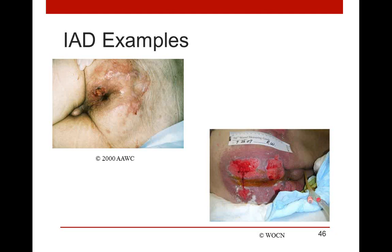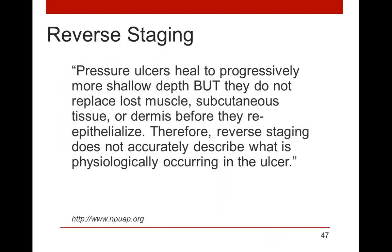Here are some examples of IAD. On the left, we see a defined area where the patient was sitting in a pool of something that caused the skin to deteriorate. On the right, we have a very large area that looks fungal at the edges — skin breakdown solely from sitting in a pool of urine or stool.